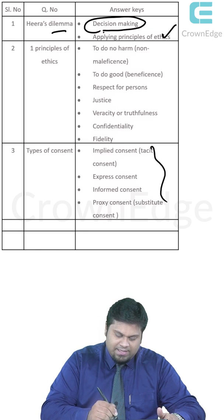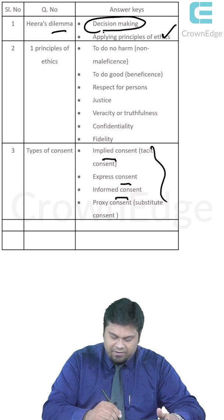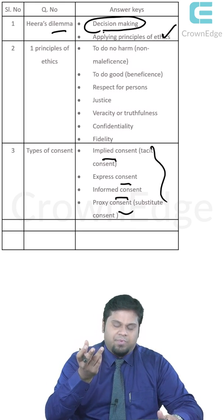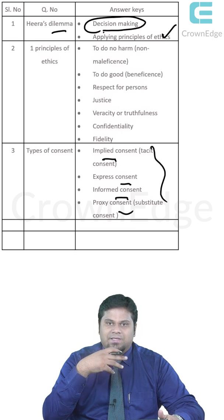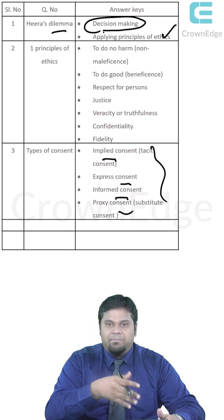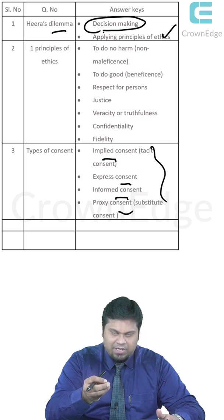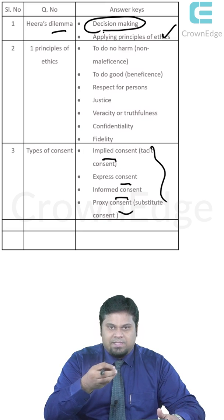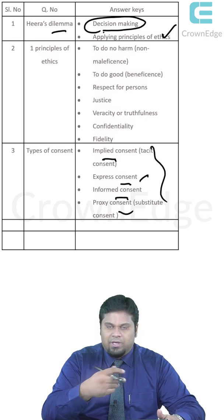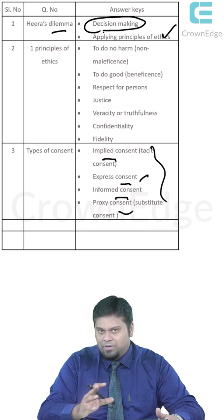The types of consent include implied consent, which is tacit; express consent, which is informed; and proxy consent. Implied consent is when the patient walks into the clinic and sits on the chair — they have implied consent for the doctor to examine or perform a preliminary investigation. Expressed consent is when the patient himself verbally tells the doctor to examine the teeth or gums. Examination only is covered by implied consent.